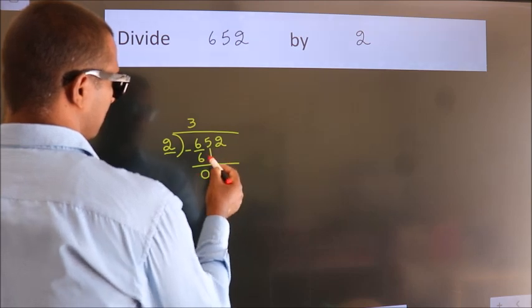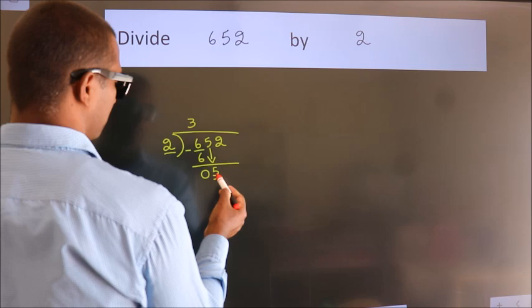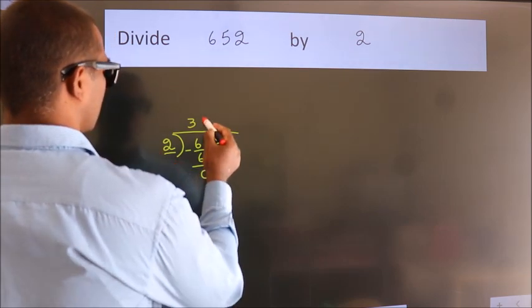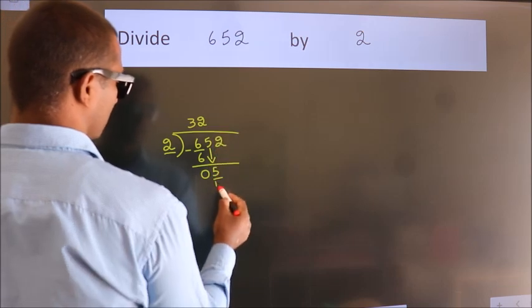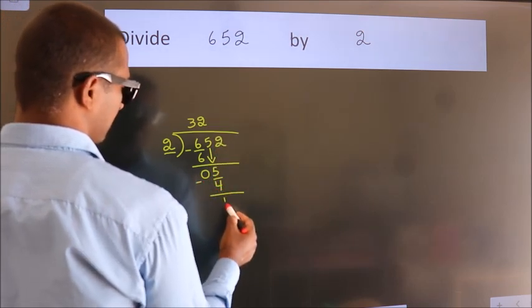After this, bring down the beside number. So, 5 down. A number close to 5 in the 2 table is 2 twos are 4. Now we subtract. We get 1.